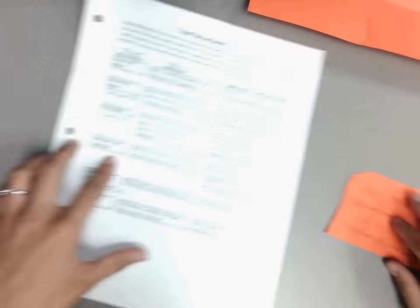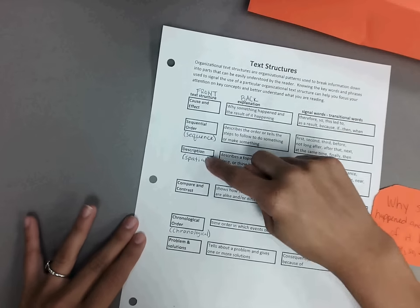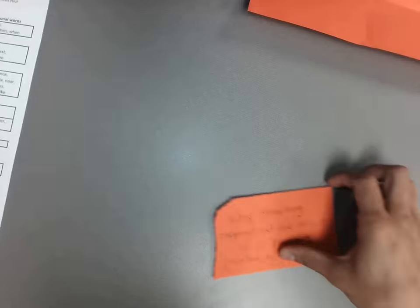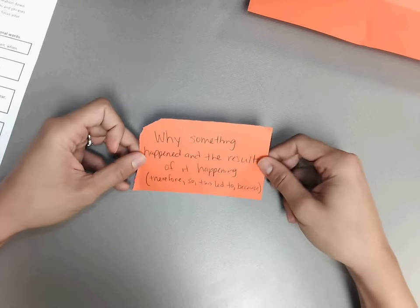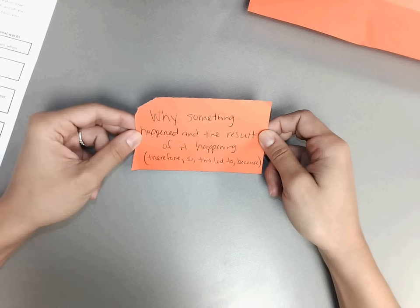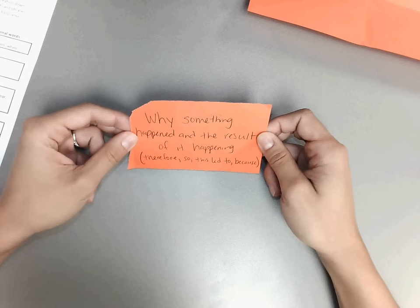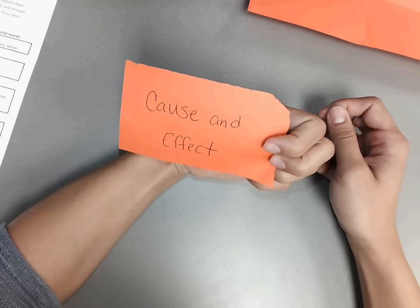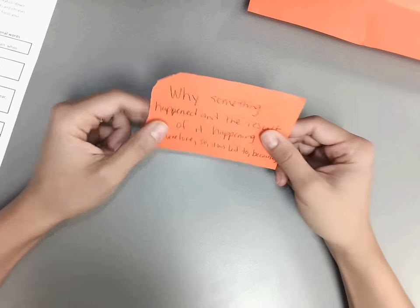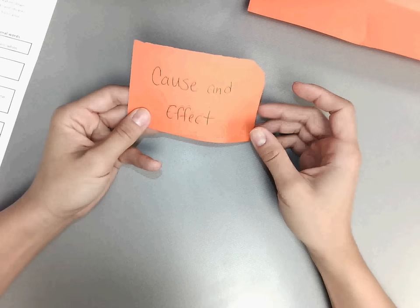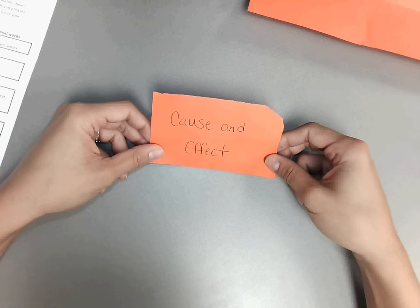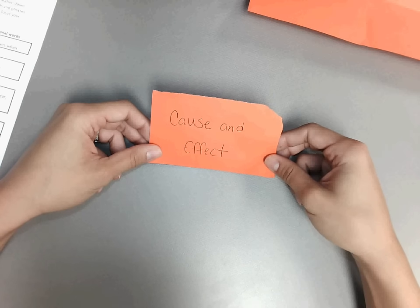Okay, so whenever you're studying, and you'll make one for each, so you should have six cards in total. You're going to first start by reading the definition and guessing or trying to figure out what text structure it is. And then you can check yourself by turning it over. When you think you've got them all, instead of looking at the definition first and flipping over to check your text structure, start with the text structure, try to repeat what the definition is, and it can be in your own words. It doesn't have to be word for word.